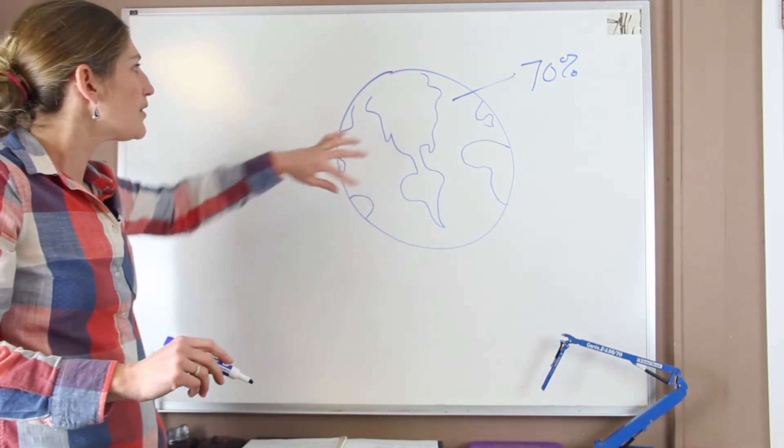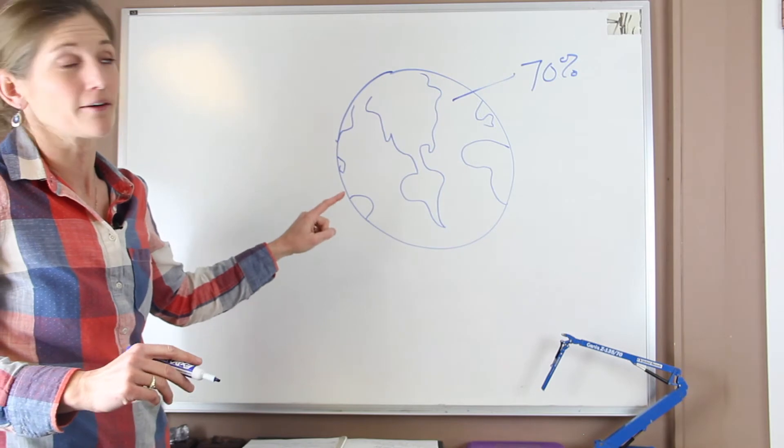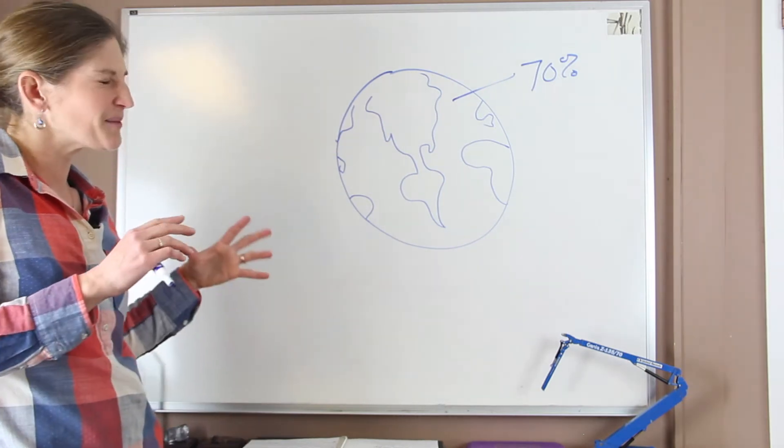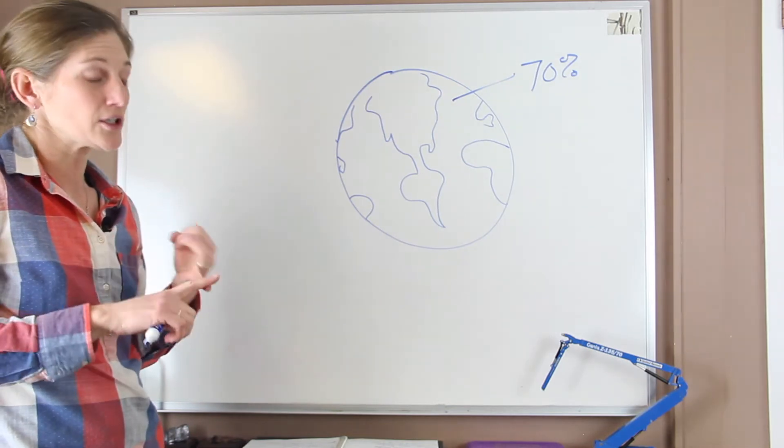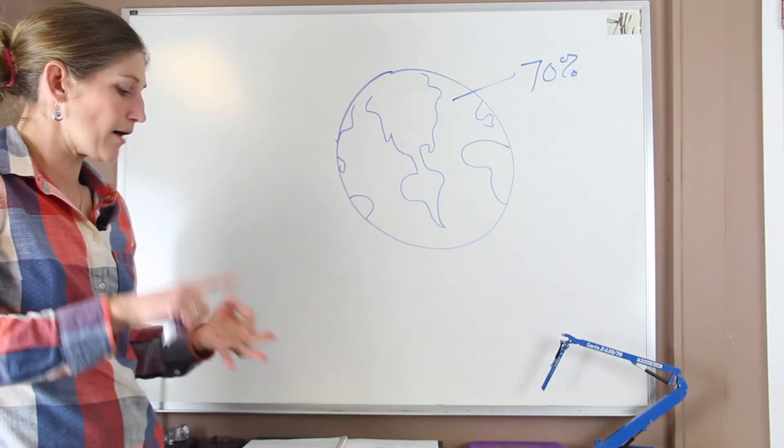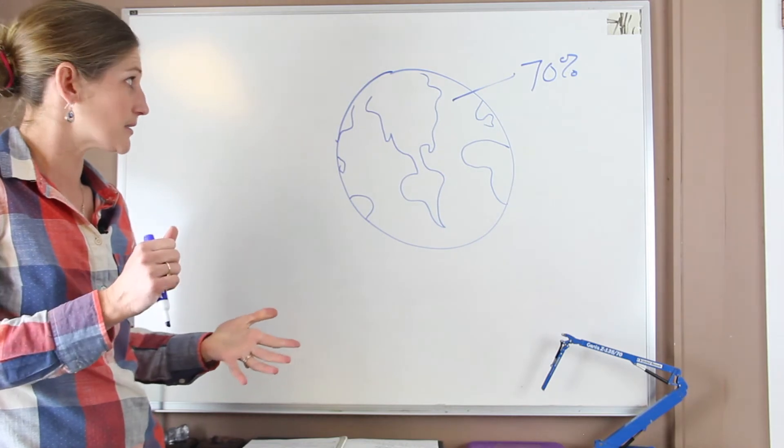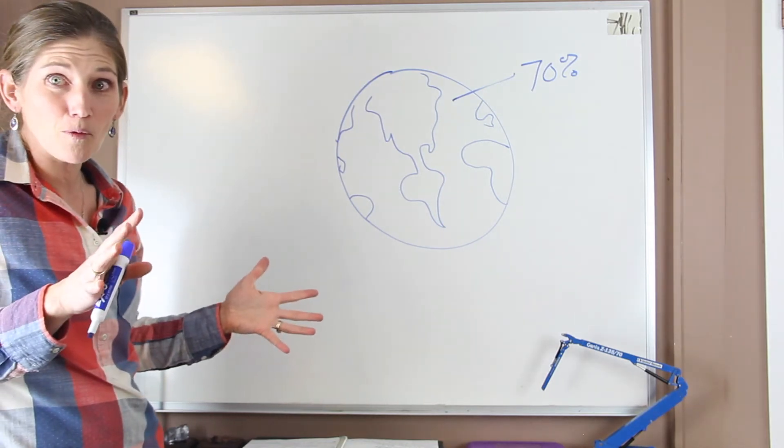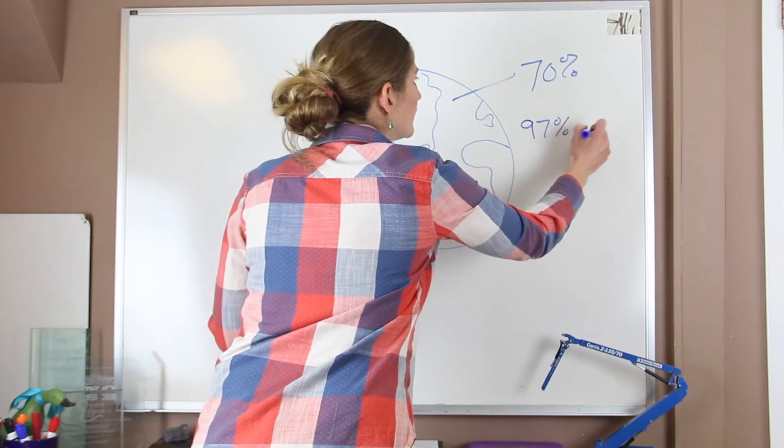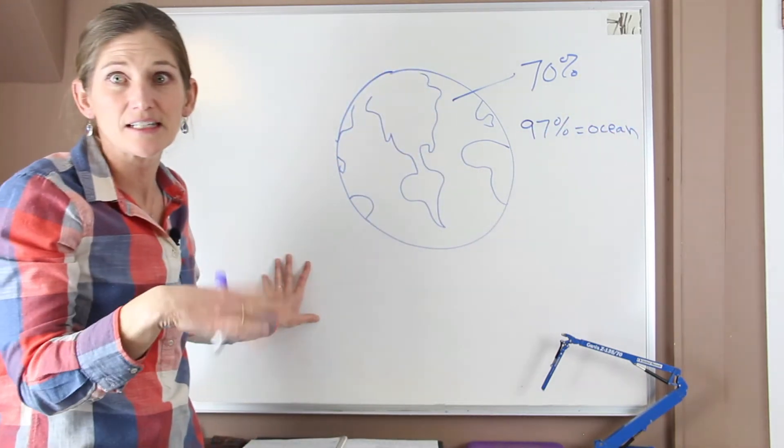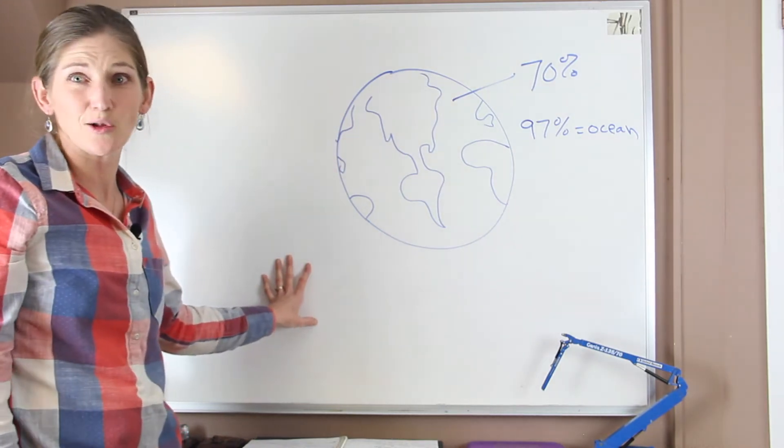The oceans include all of the saline or salty water on the earth. Now when we go and we think about all the water on earth, so all that water in our hydrosphere, it includes our glaciers, our ice caps, our groundwater, rivers, streams, lakes. Of all of that water, 97% is in the ocean. And that includes our seas, all that stuff. 97% is salty.